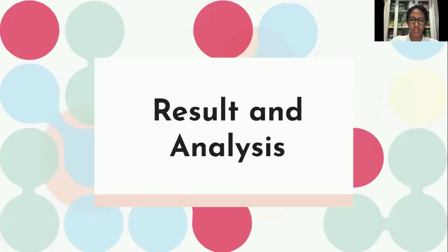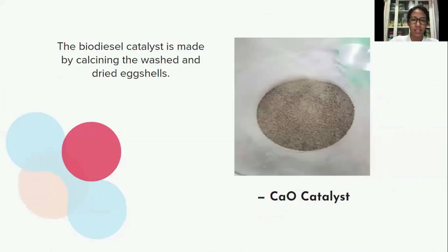Results and analysis. The biodiesel catalyst is made by calcining the washed and dried eggshells. The purpose of eggshell calcination is to remove carbon dioxide compounds through the decomposition of calcium carbonate in eggshells. The calcination was carried out at a temperature of 250 degrees Celsius for 4 hours. The reactions that occur in the calcination process are as follows.